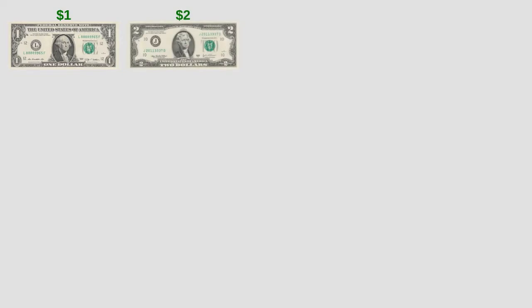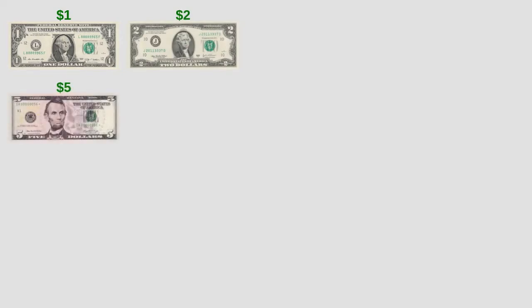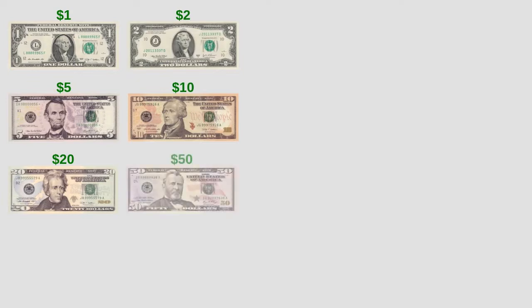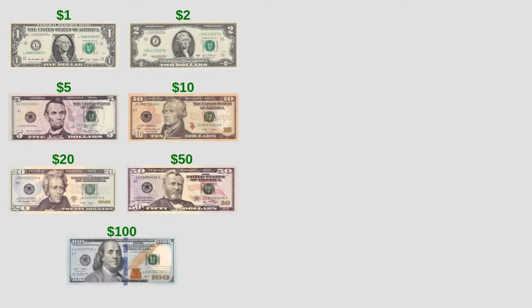We can have money in different amounts and values. For example, if we live in the United States, we can have a one dollar bill, a two dollar bill, a five dollar bill, a ten dollar bill, a twenty dollar bill, a fifty dollar bill, or a one hundred dollar bill. These values are called denominations.